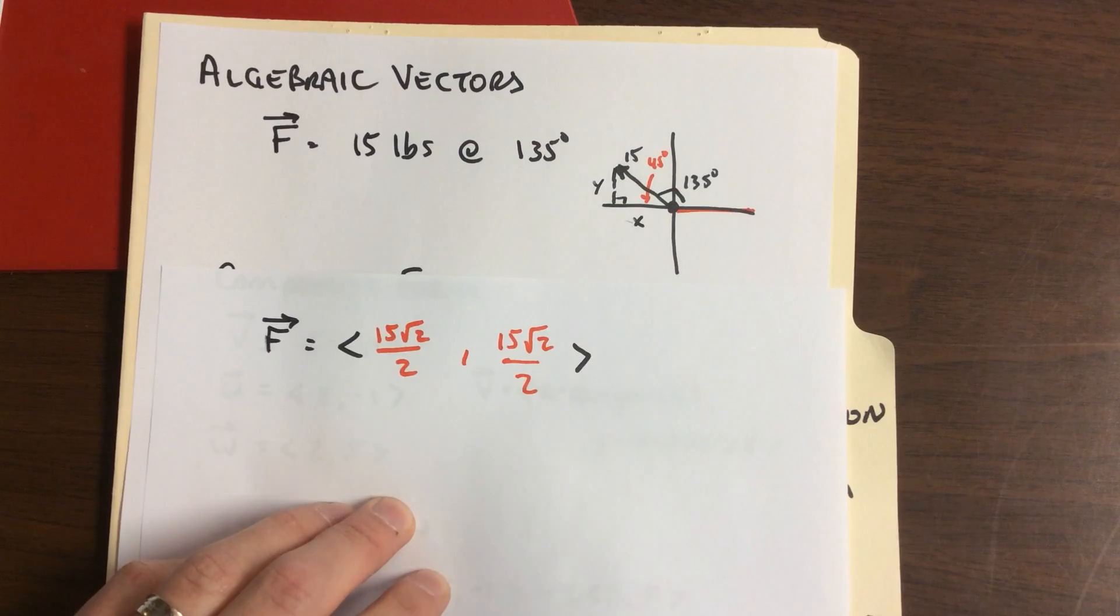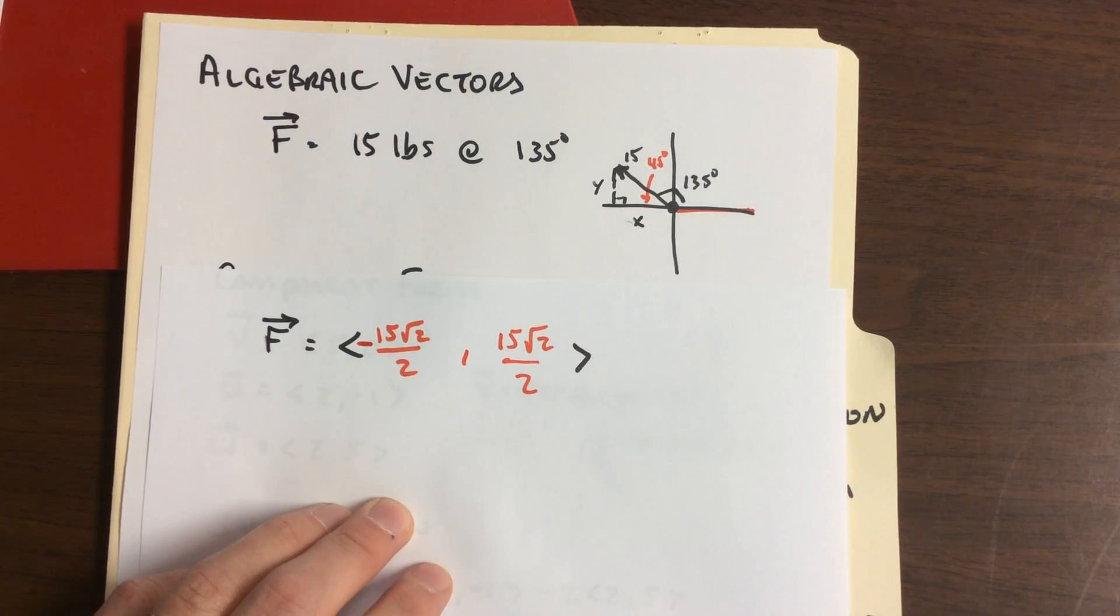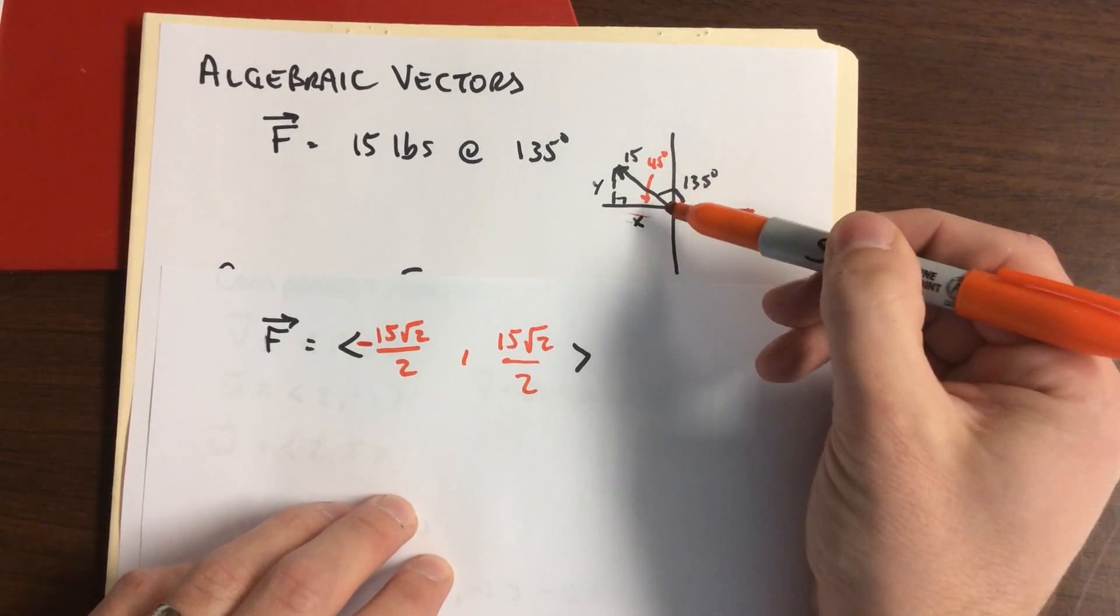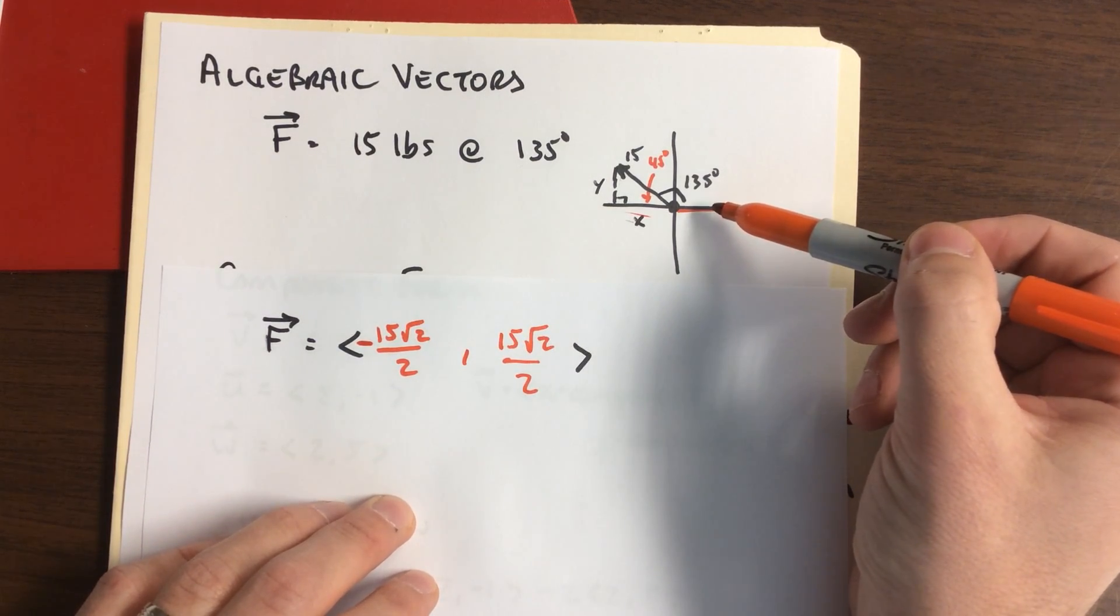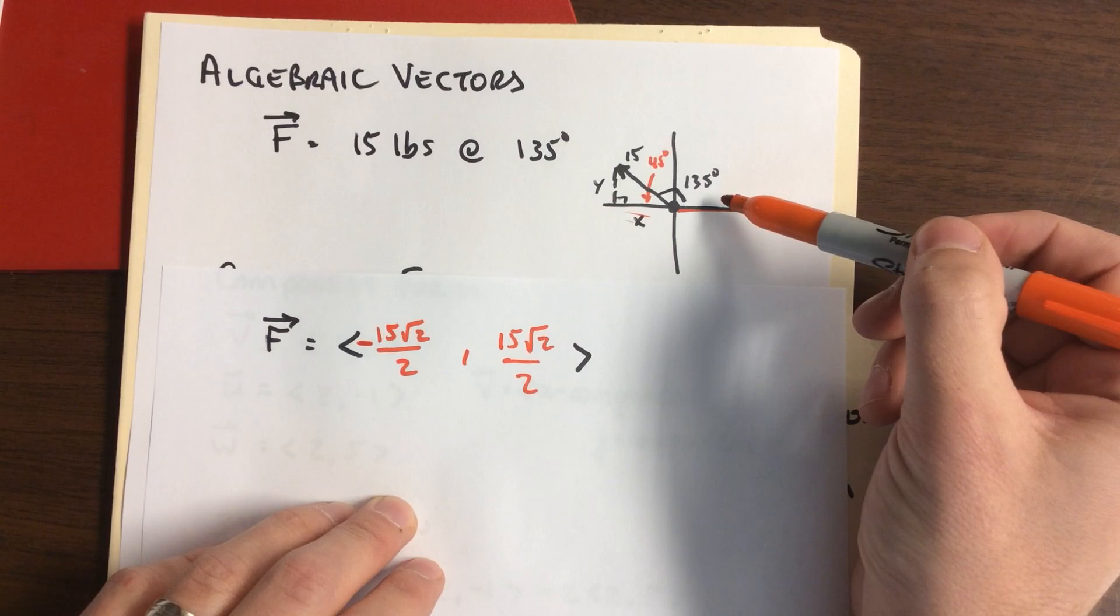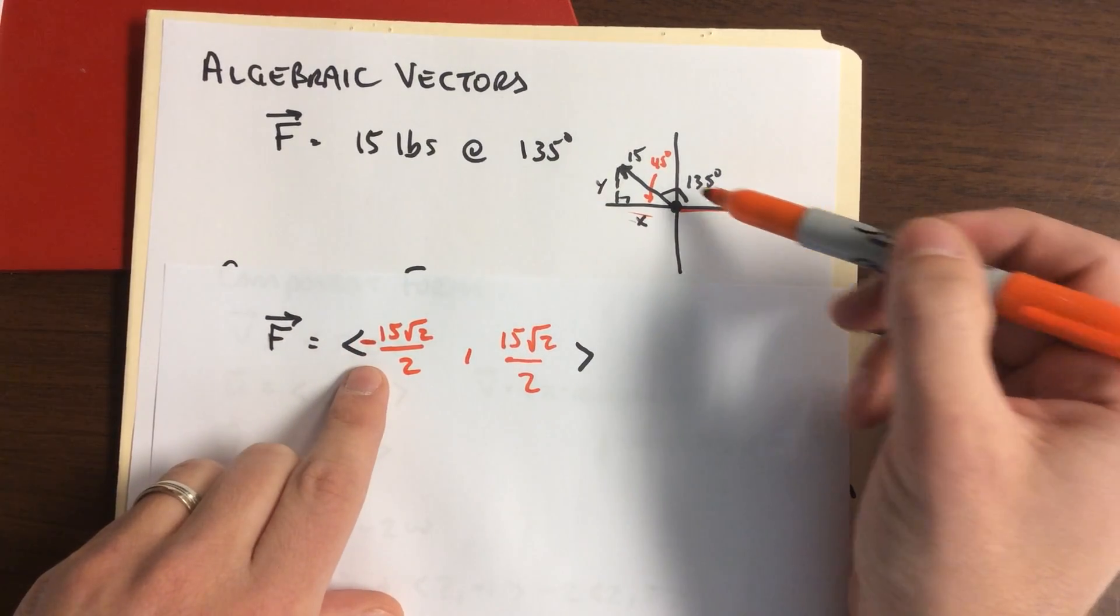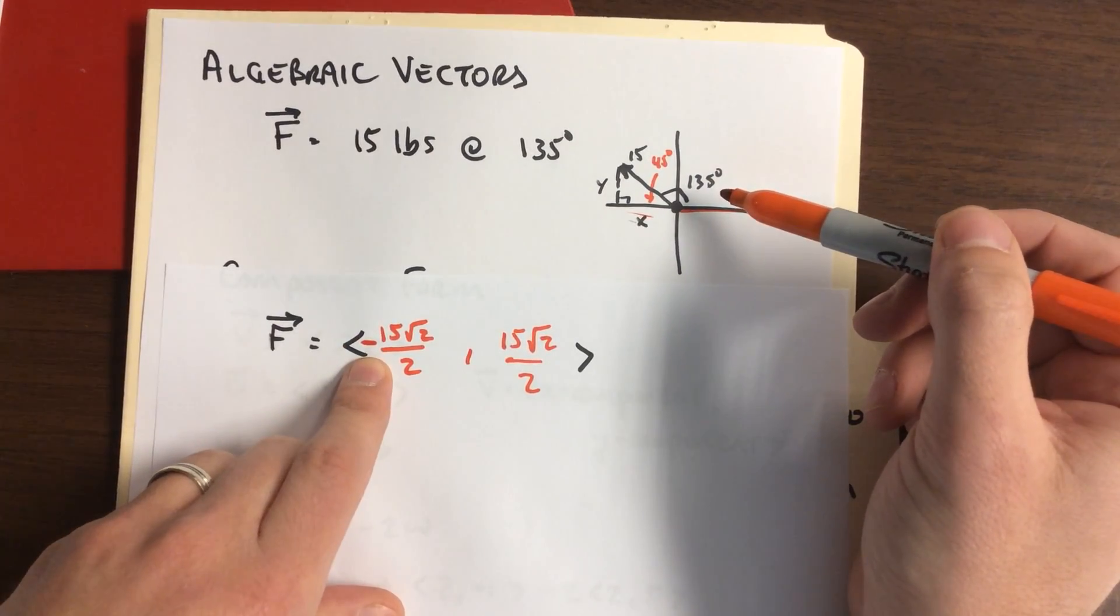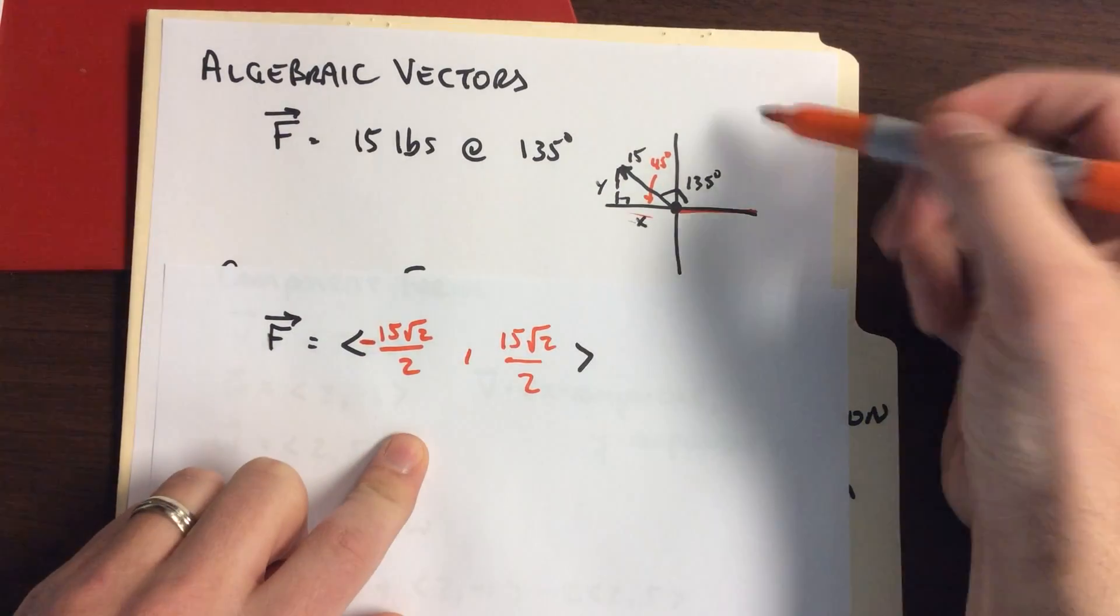Cosine has to be negative. Here's where we drew the triangle. We had 45 degrees there. 135. If we think back to our unit circle, what's the cosine of 135? Negative. So by keeping with that angle, it gives us the negative. Knowing the unit circle, we can identify what's positive, what's negative.